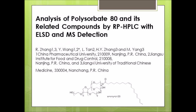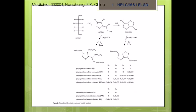As I said, the polysorbate 80 quantitation with the HPLC ELSD-MS detector, there is a paper by Zhang group published in the Journal of Medicine. Now in this paper they describe the process of making polysorbate 80. The first step is the dehydration of sorbitol to make sorbitan.